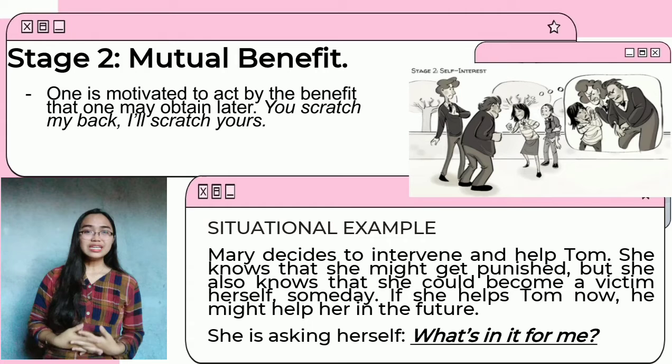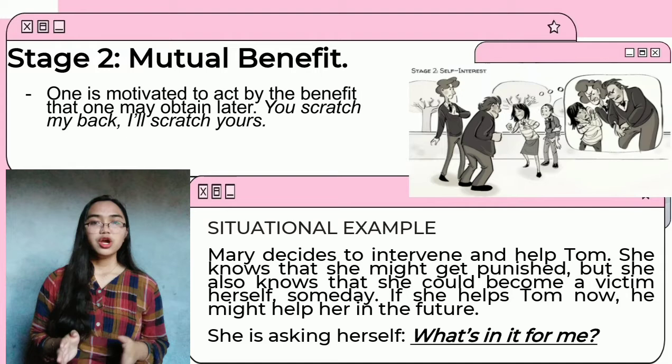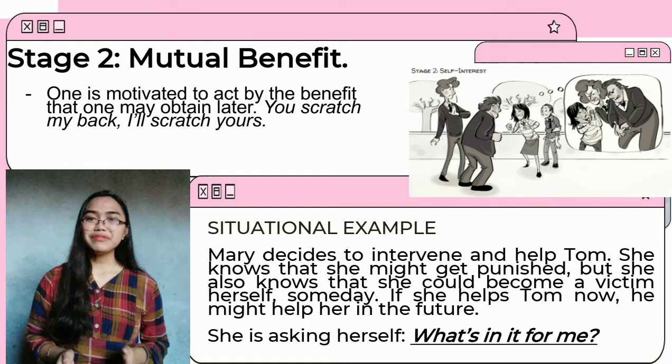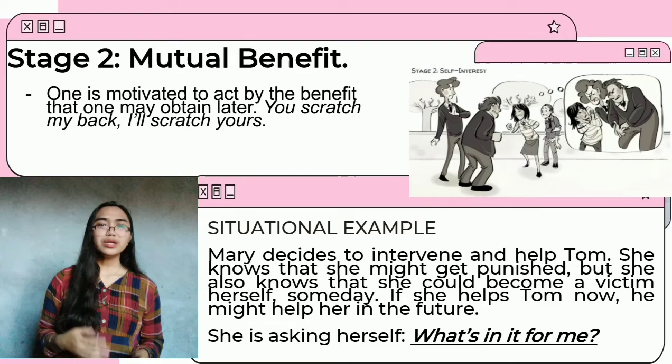Stage two is about mutual benefit. One is motivated to act by the benefit that one may obtain later — if you scratch my back, I'll scratch yours too. This is a stage wherein the moral behavior obtains reward or serves one's needs. For instance, at stage two, we are motivated by our self-interest. Mary decides to intervene and help Tom. She knows that she might get punished, but she also knows that she could become a victim herself someday. If she helps Tom now, he might help her in the future. She is asking herself, what's in it for me?